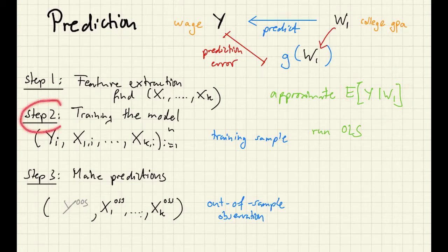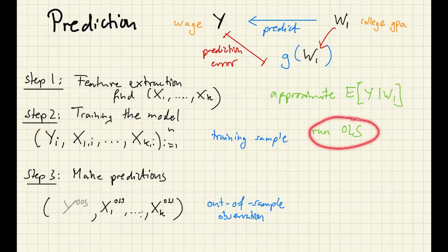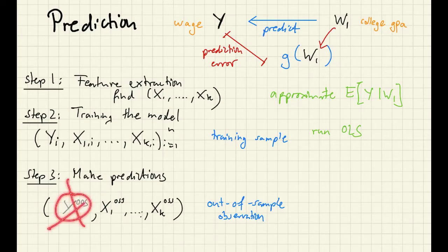And then step two, training the model, and this amounts to an OLS regression on our training sample. And then step three is profit. This is where we use our estimated coefficients to make predictions on a data set where we don't observe the variable that we want to predict.